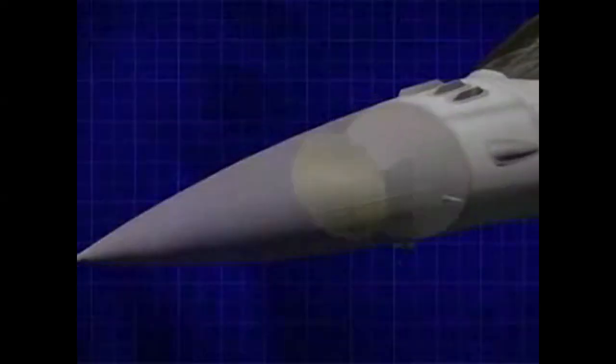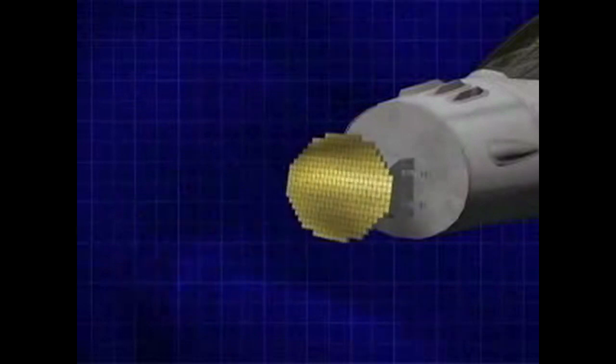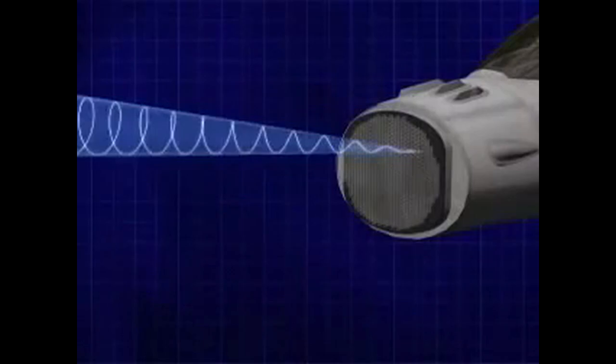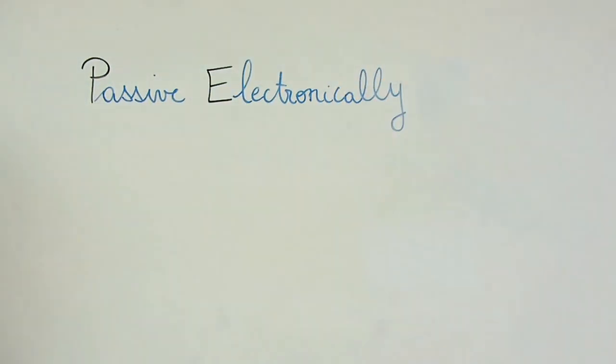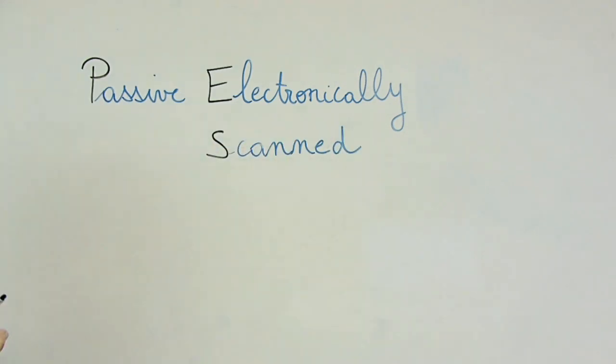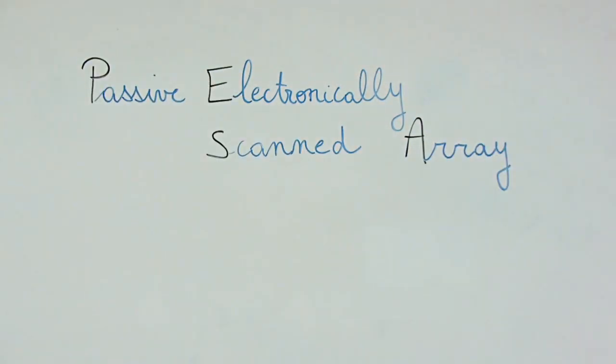Starting in the 1960s, new solid-state devices capable of delaying the transmitter signal in a controlled way were introduced. Engineers came up with the first practical large-scale passive electronically scanned array or simply phased array radar.